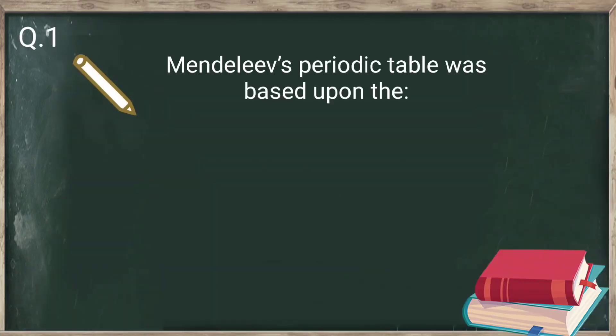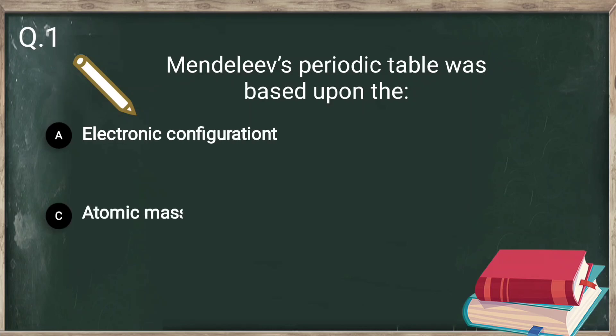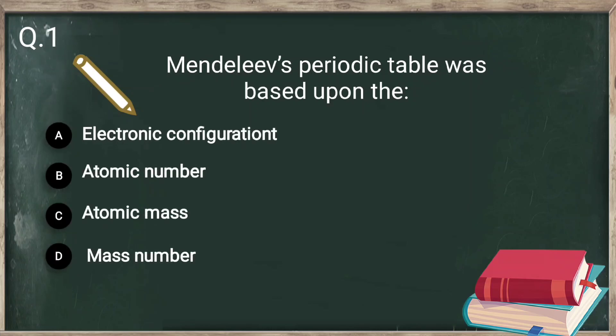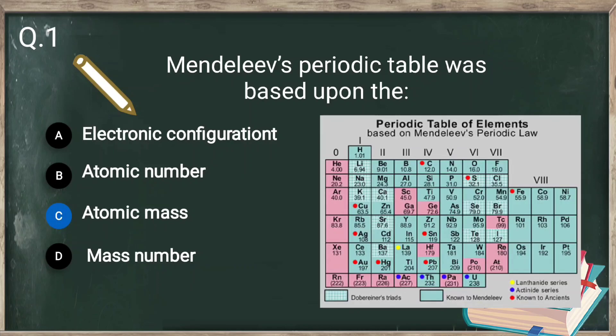The first question is: Mendeleev's periodic table was based upon — electronic configuration, atomic number, atomic mass, or mass number? The correct answer is atomic mass. Mendeleev arranged 63 elements according to their increasing atomic masses.